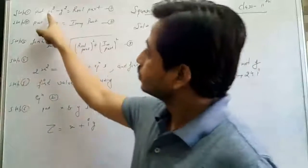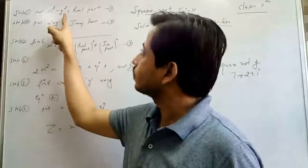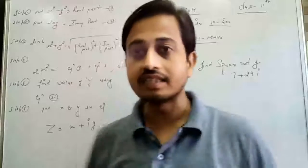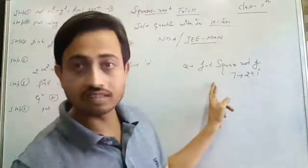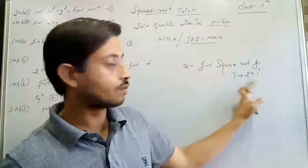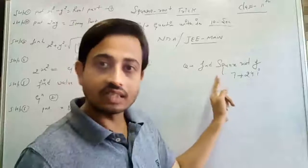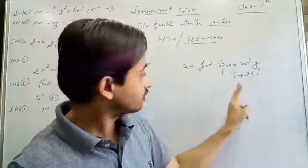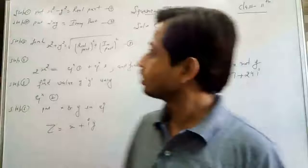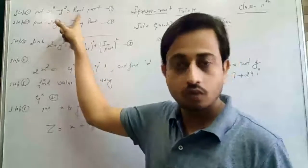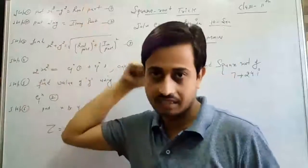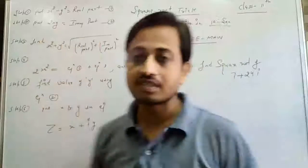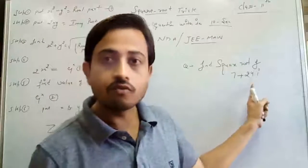The first step is to put X² minus Y² equal to the real part. Do you know what the real part is in a complex number? For example, if we take the complex number and find its square root, the real part here is 7. So we put X² minus Y² equal to 7. The second step is to put 2XY equal to the imaginary part. In this case the imaginary part is 24.